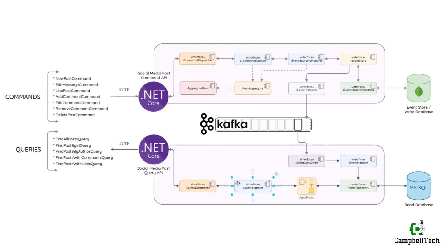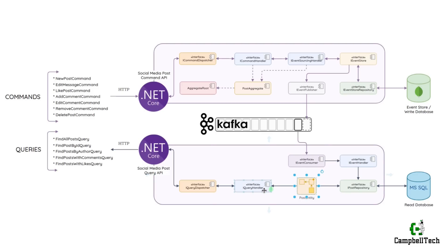The query handler method will then handle the query and translate it into an Entity Framework query that will execute it against the read database via the iPostRepository interface. Once it has retrieved one or more social media post records from the read database, it'll return them via the query dispatcher interface back to the controller method, which will reply to the client with one or more social media posts.